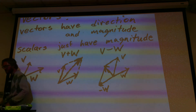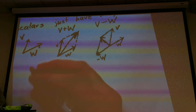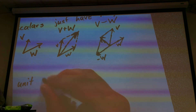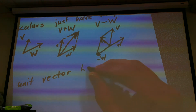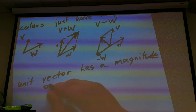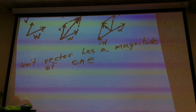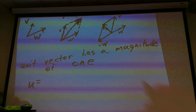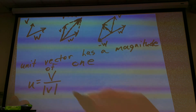Now, one of the properties of vectors is you can always find a unit vector. A unit vector has magnitude one, and this unit vector u is just v divided by its own magnitude.